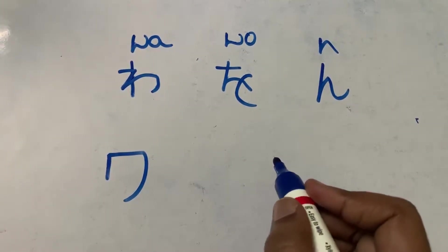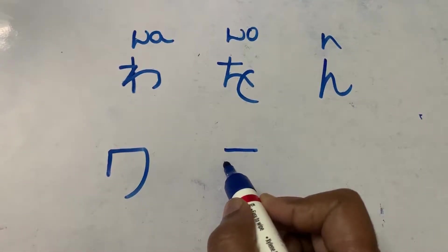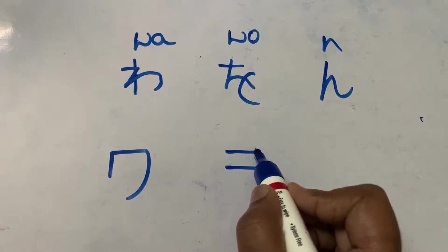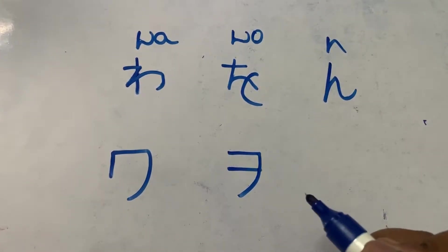Next katakana wo. The first stroke, the second stroke and the third stroke. This is katakana wo.